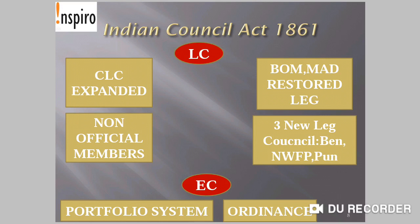Other than the Legislative Council-related provisions, there were two executive-related provisions. One is the Portfolio System. The Portfolio System, started by Lord Canning in 1859, got government approval. It means each member in the Viceroy's Executive Council was given an independent charge of a department and would be finally responsible for taking final orders under that department.